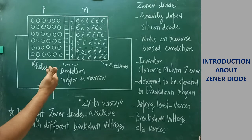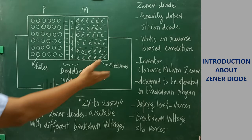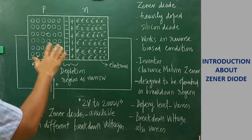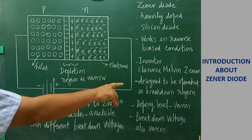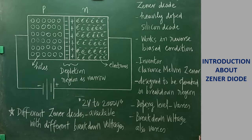A Zener diode is a heavily doped reverse biased silicon diode — that is the simple definition. The inventor who designed this was Clarence Melvin Zener. This Zener diode is designed in such a way that it should be operated only in the breakdown region. It is designed to be operated in the breakdown region — we have to learn the exact meaning of breakdown in the next slide.